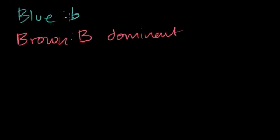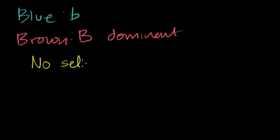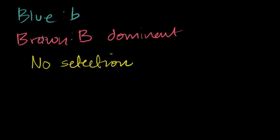The only way you're going to see blue eyes is if you have a blue allele from each of your parents. The other assumption I'm going to make is that this population has a stable gene pool with respect to the eye color gene. No selection is taking place — no natural selection — so you're not more or less likely to reproduce, and the number of children you have is not going to be larger or smaller based on your eye color.